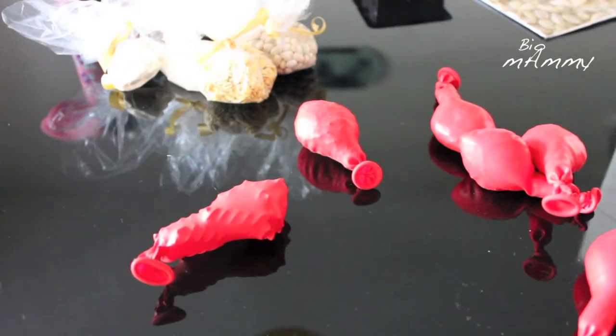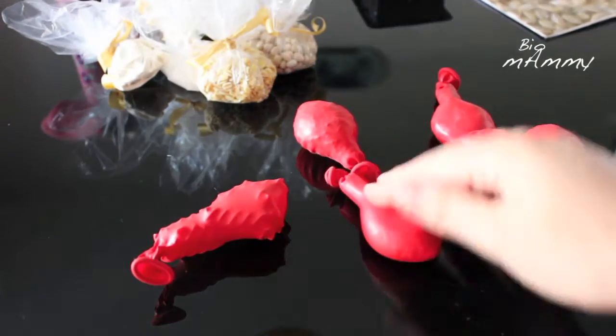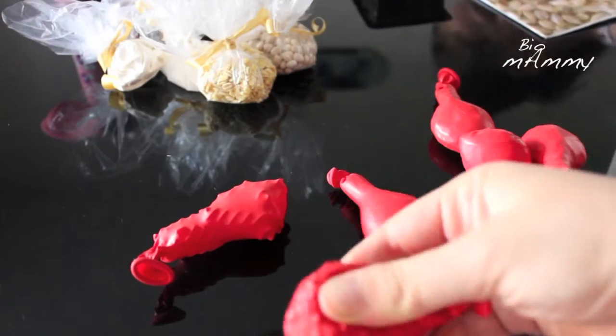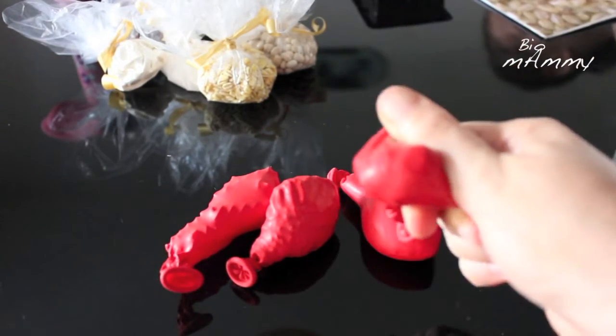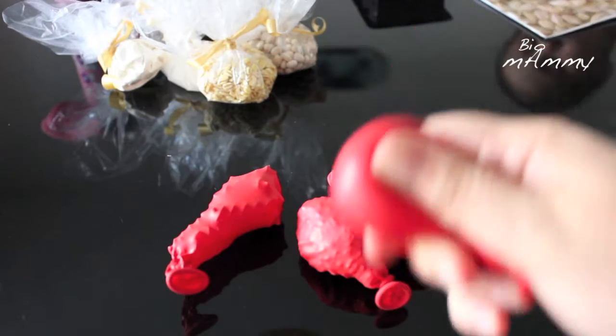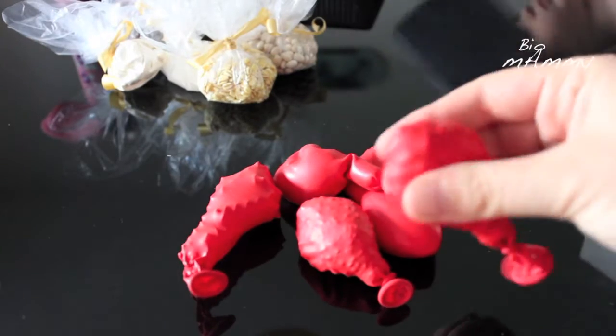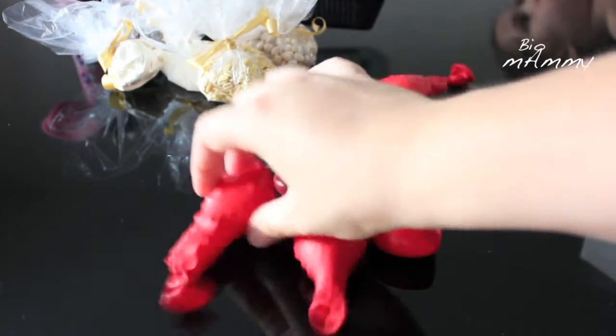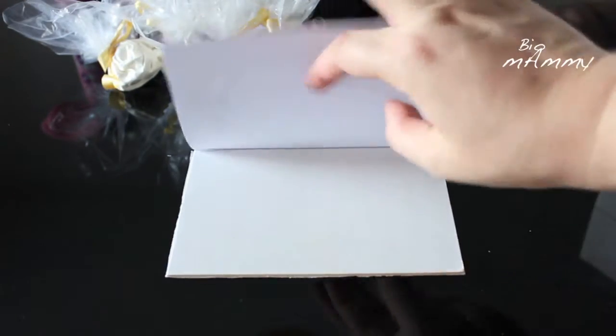We took some balloons, all colored the same, and put the same material in each. So this is barley, these are raisins, this is flour, white beans and pasta. Then to do the cards we used cardboard.